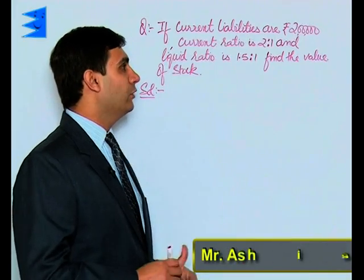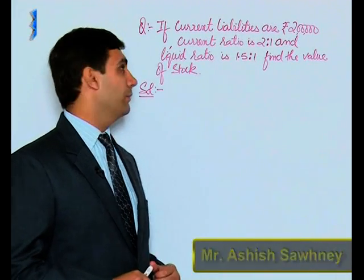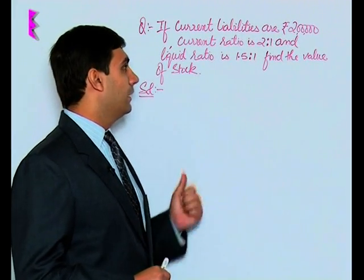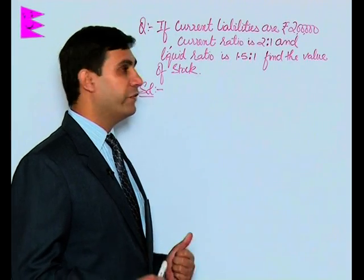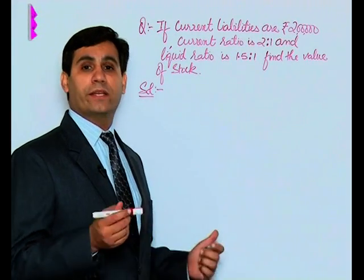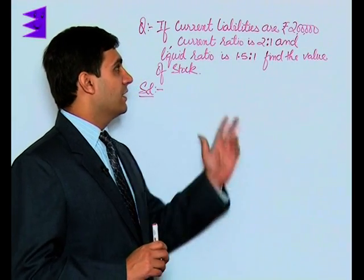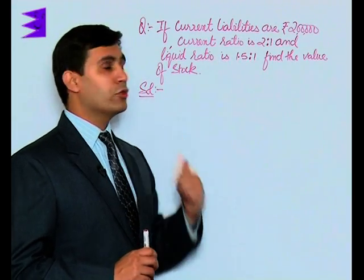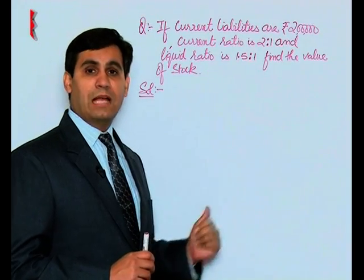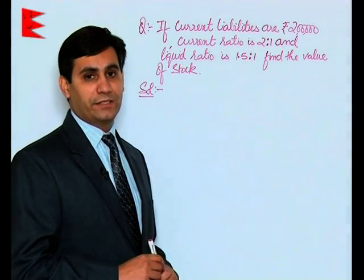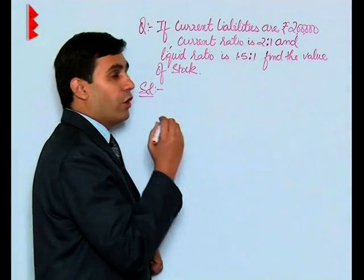If the current liabilities are given to be 2 lakh, the current ratio is 2 is to 1, and the liquid ratio is 1.5 is to 1, find the value of stock or inventory. In this case, the current ratio is given, the liquid ratio is given, and we are given current liabilities. Let us come to the formula.